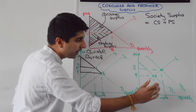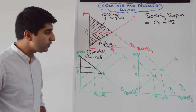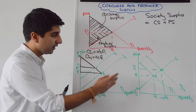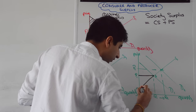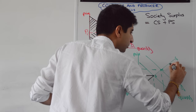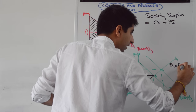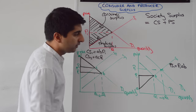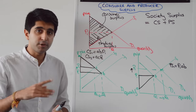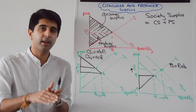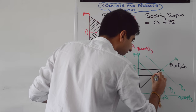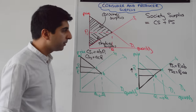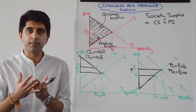Now let's look at a demand shift to the right to see what's happened to producer surplus. Initially, the area above the supply curve beneath the price line of P1 gives producer surplus 1, equivalent to P1, A, B. With demand shifted right, we have a new equilibrium at a higher price P2 and higher quantity Q2. Producer surplus 2 is now P2, C, A — it has increased, as expected.